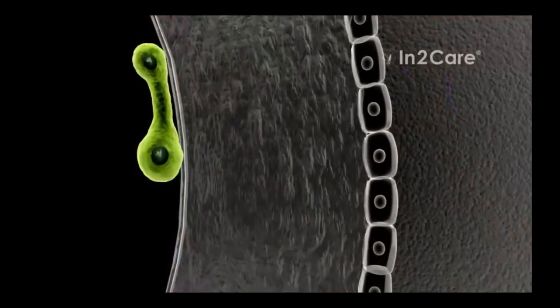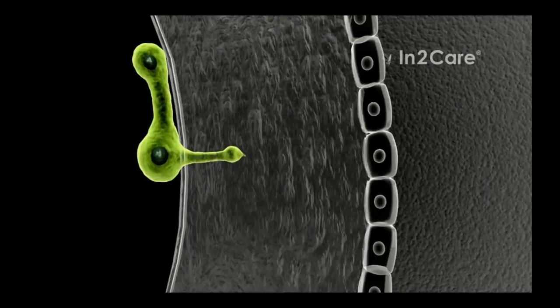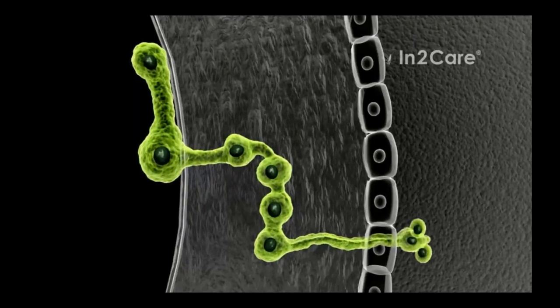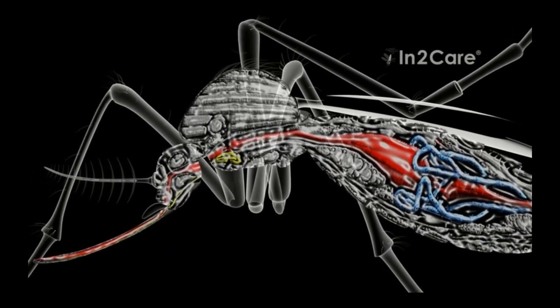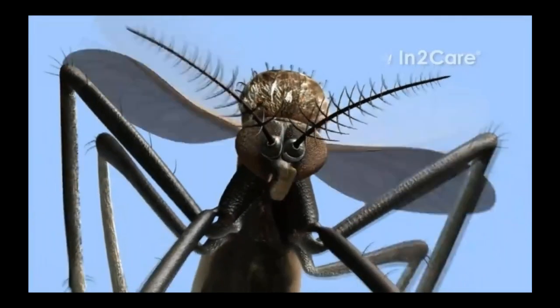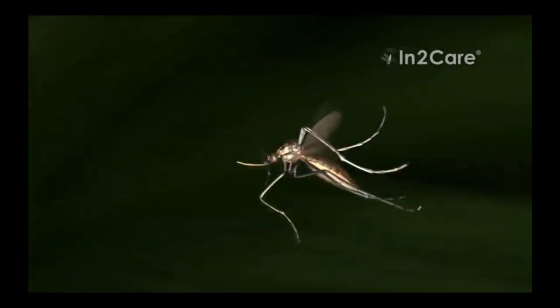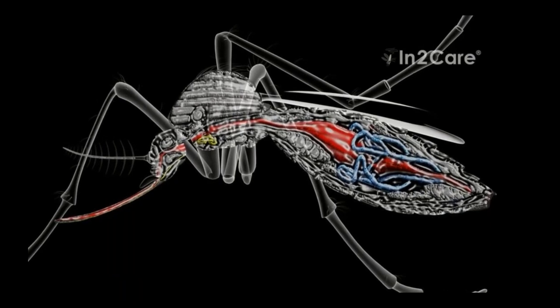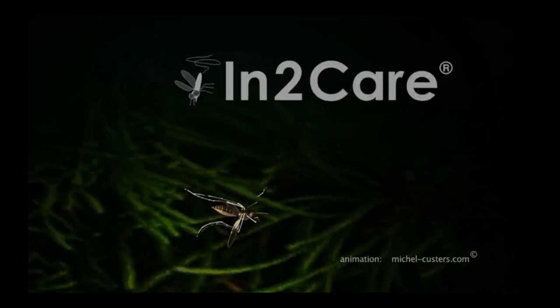The larvicide is not the only bioactive in the station. The second agent is an insect-killing fungus. Its spores attach to the mosquito skin upon contact with the gauze. This fungus is a safe biological active that does not infect humans or pets. The spores use germination tubes to penetrate the insect skin. Once inside the mosquito, the fungus produces blastospores that excrete toxins. This infection makes the mosquito less active and reduces its ability to bite humans. It also inhibits the development of viruses in the mosquito gut. After a few days, the mosquito succumbs to the fungal infection and dies.